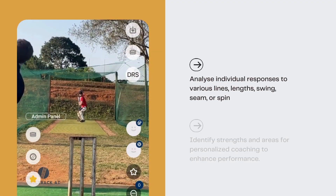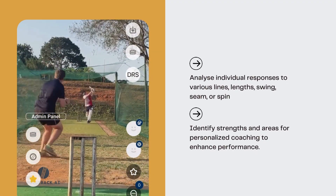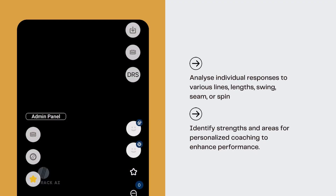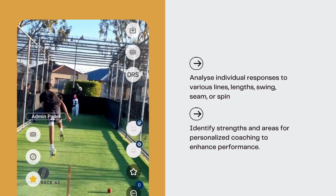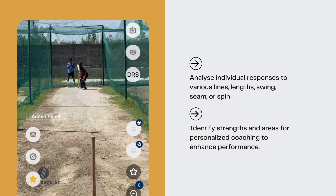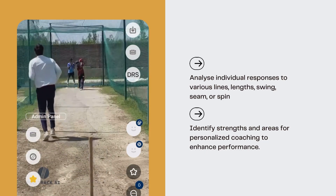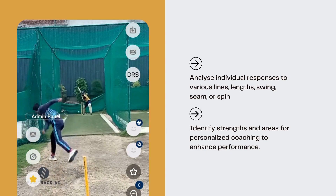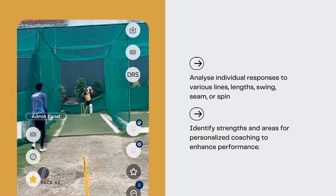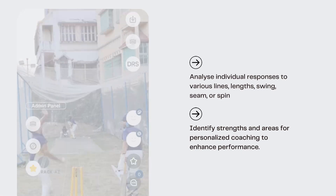For batters, FullTrack provides a detailed analysis of how they respond to different types of deliveries. You can closely examine their reactions to varying lines, lengths, swing, seam, and spin.